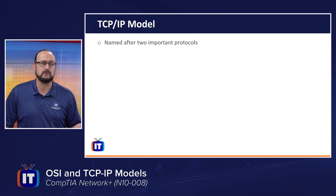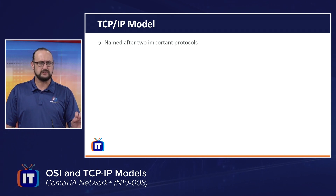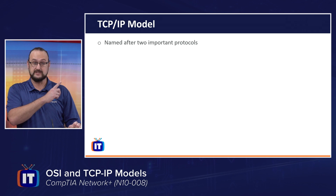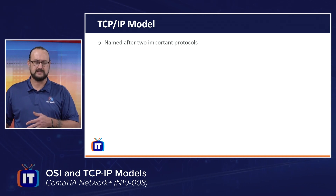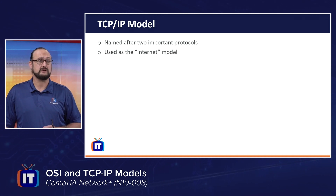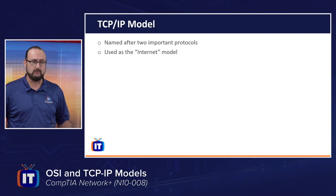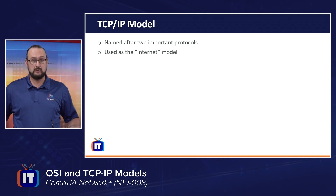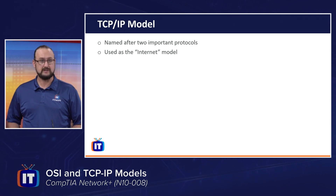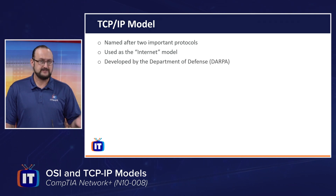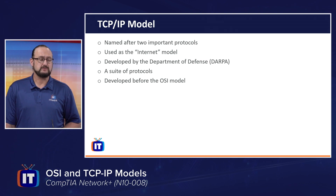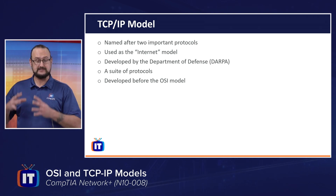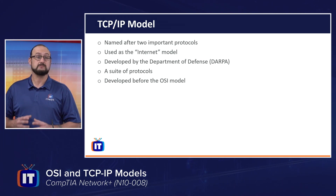It is named after two of the most important protocols — the Transmission Control Protocol and IP. It's not the only protocols within this suite, but it governs how we reliably get information from source to destination. It's also considered the internet model. In the earlier days when it was just military, it was also called the DOD model because it was really only the Department of Defense and contracting universities. It was developed by DARPA, the Defense Advanced Research Project Agency, and it is the de facto standard for communications across the public internet today.